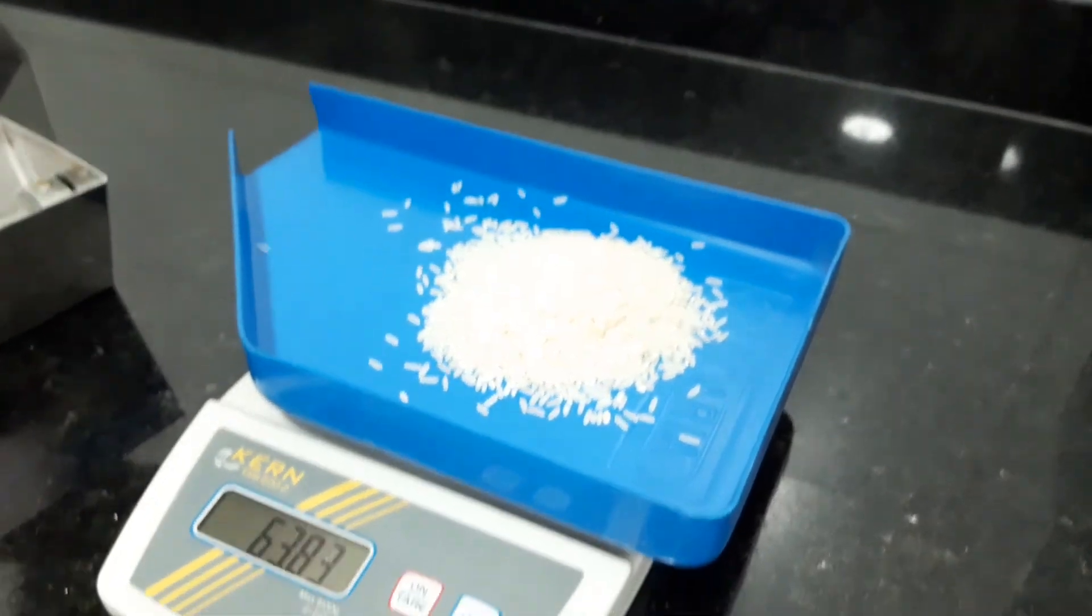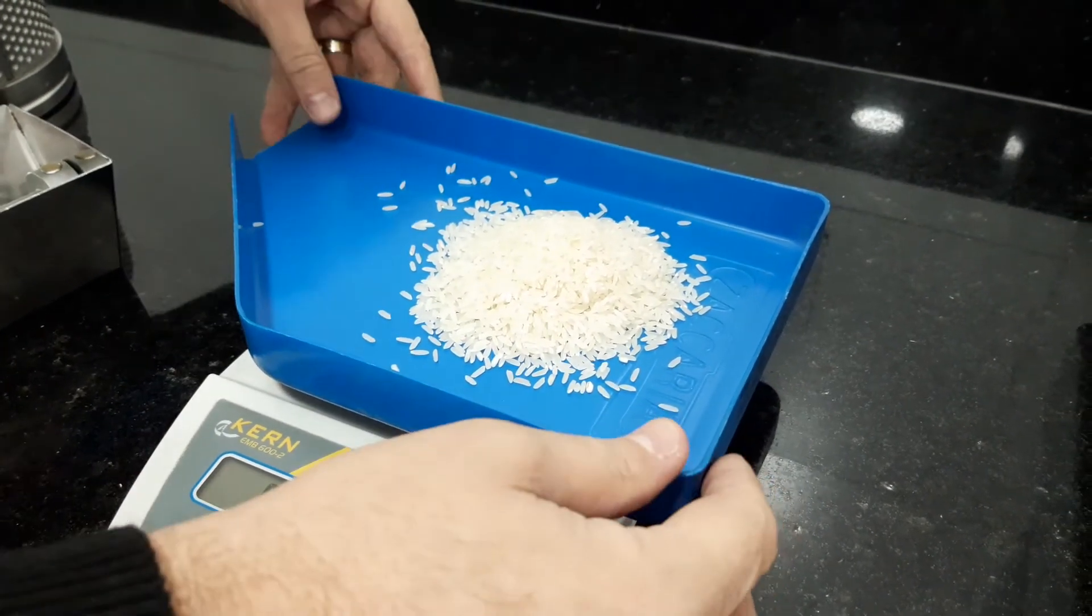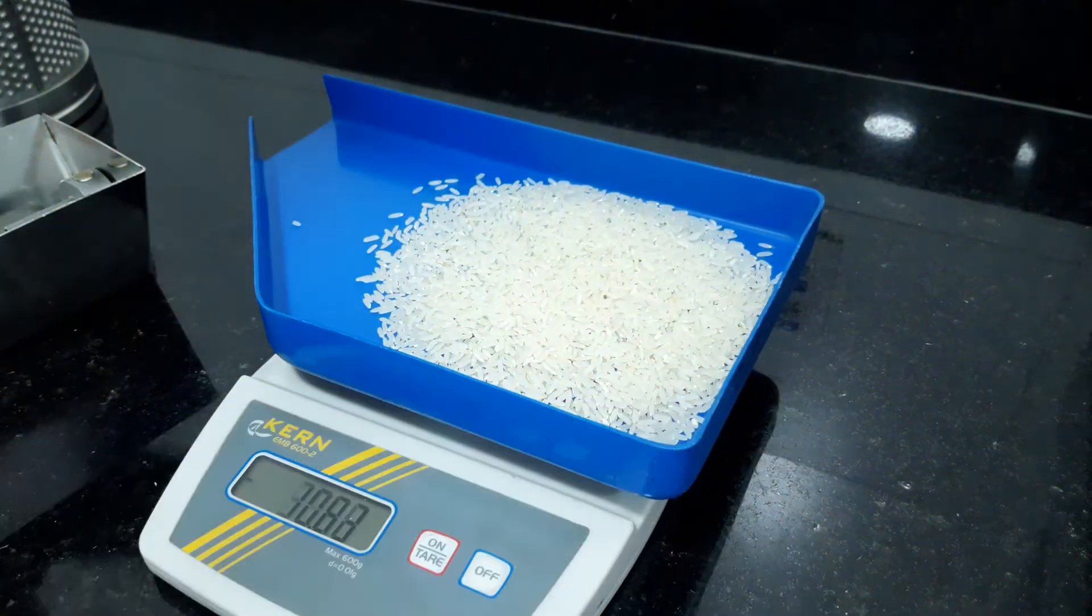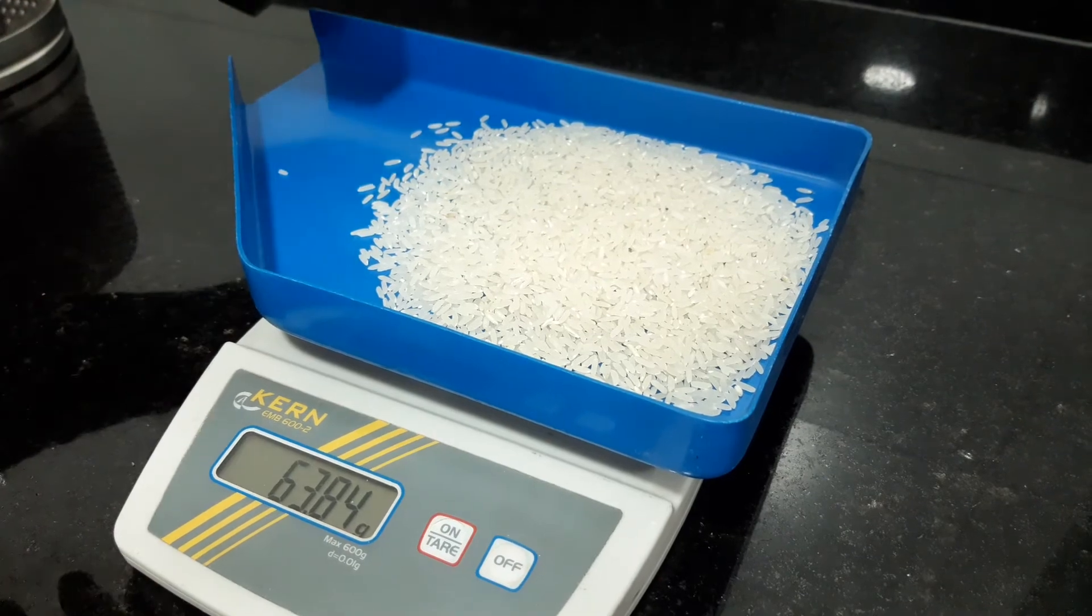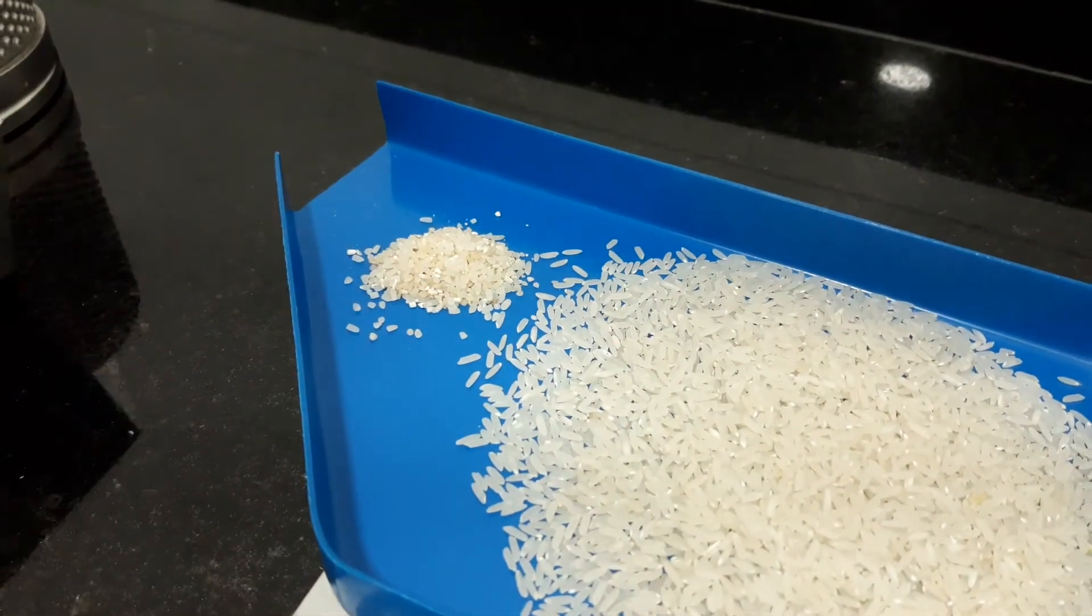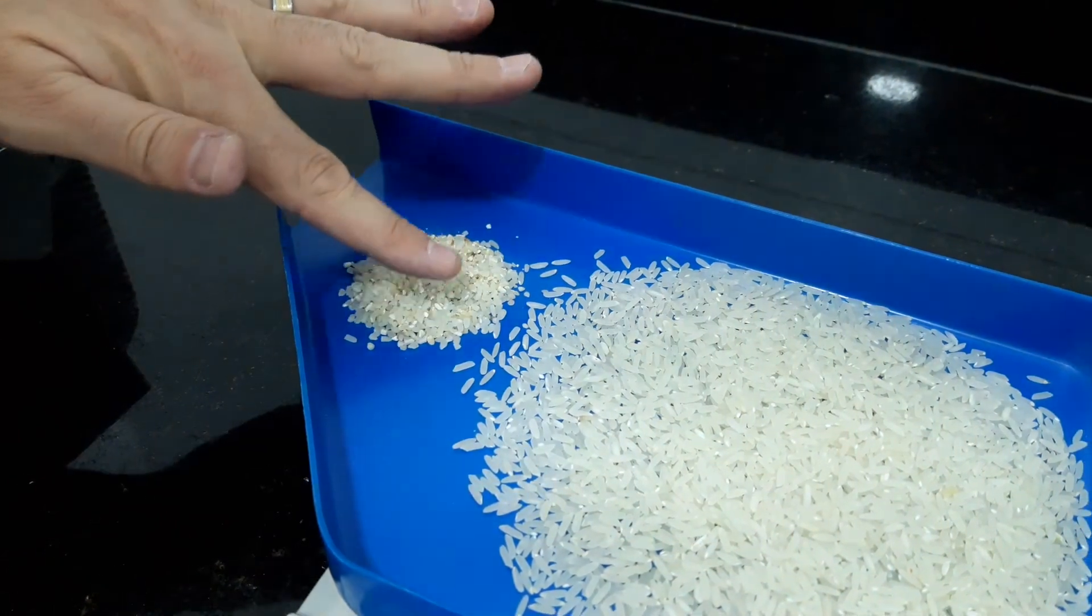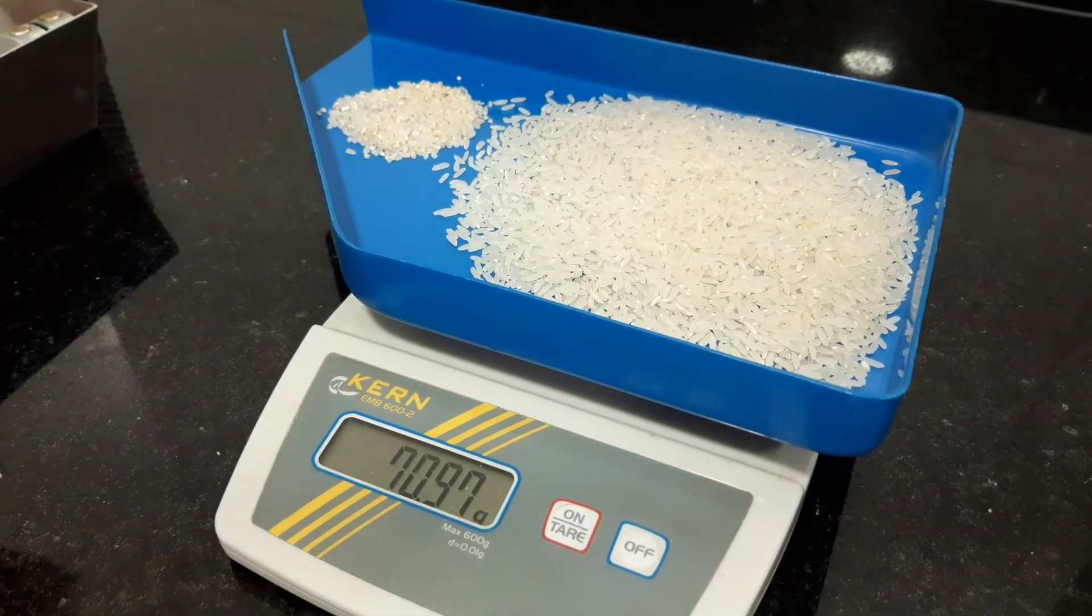We can discharge from here. We have, from 70 grams, we have 63.84 whole grain, and the rest will be the broken. So here we can see exactly the broken and the whole grain.